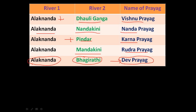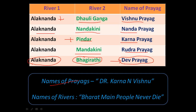We can use mnemonics to remember the Prayag names. The mnemonic is 'Dr. Karna and Vishnu': D for Dev Prayag, R for Rudra Prayag, K for Karna Prayag, N for Nanda Prayag, and V for Vishnu Prayag. To remember the river names, use 'Bharat me people never die', which uses the initials of the rivers in reverse order.